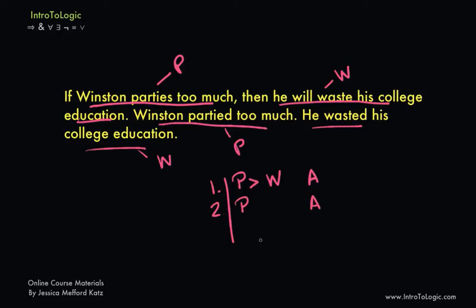Now modus ponens tells us if we have a conditional, which on line one we sure do. Here we have if P, then W. Remember that this little sideways V is a representation of an if-then sentence, or what we call a conditional. So we have a conditional on line one. And line two, we have the antecedent of that conditional. And that's exactly what modus ponens calls for. We need both the conditional and the antecedent of that conditional, which we have on line two.